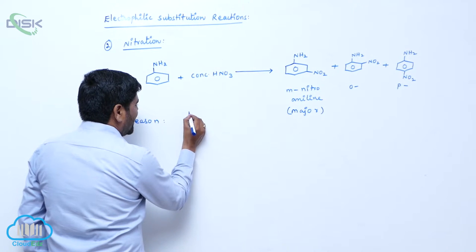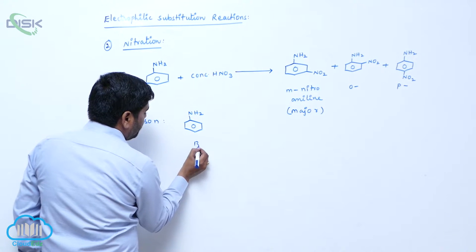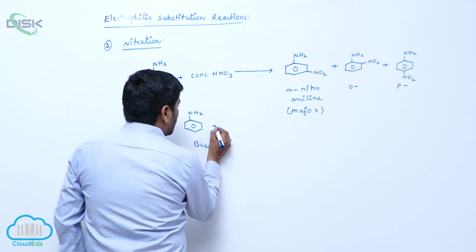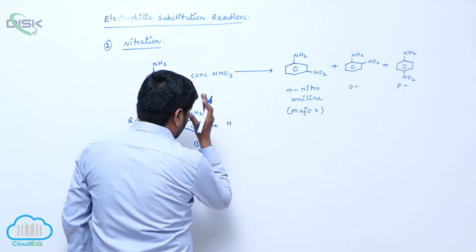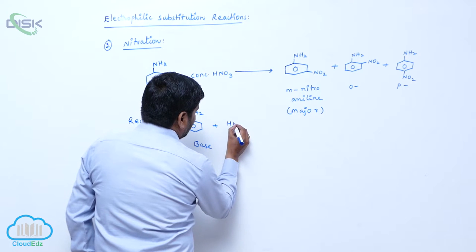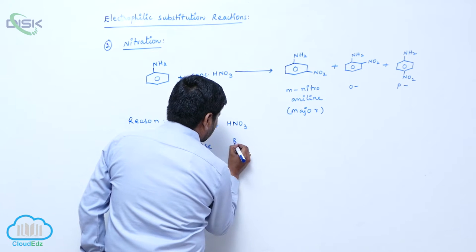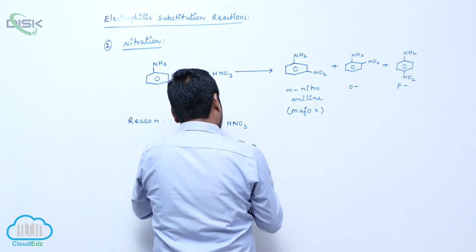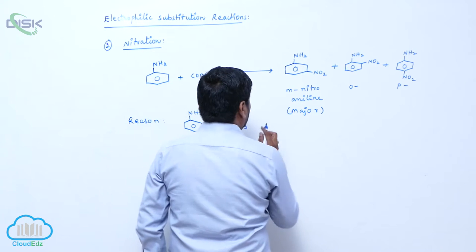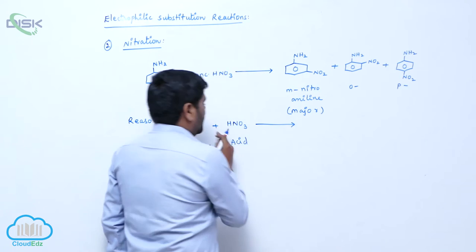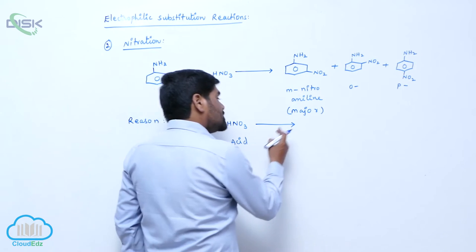Because aniline is a Lewis base, when reactive with nitric acid, nitric acid, this is acid. It is which one? Acid. So therefore, a base reactive with an acid, salt is formed.